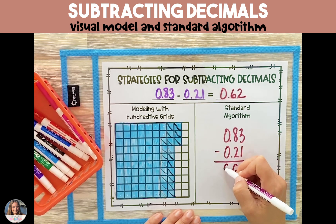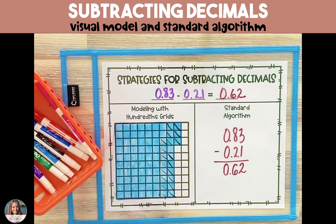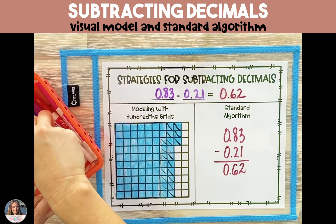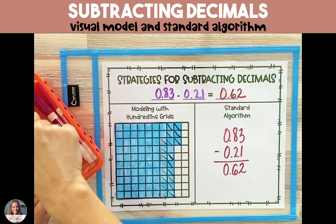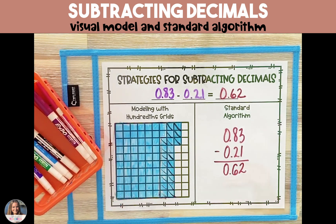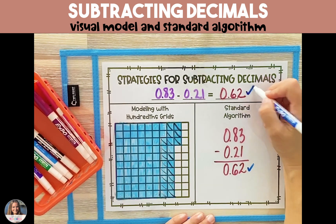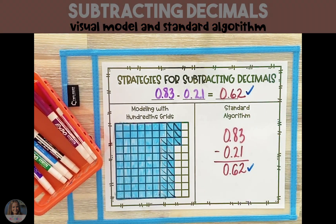Once we have our answer of 62, we're going to bring our decimal point straight down into our answer for a final answer of 62 hundredths.